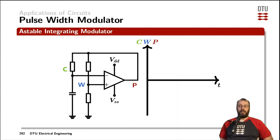In a very specific implementation, we can combine oscillation with the comparator with the modulation of the pulse width of the signal. The circuit shown here on the diagram is called an astable integrating modulator.